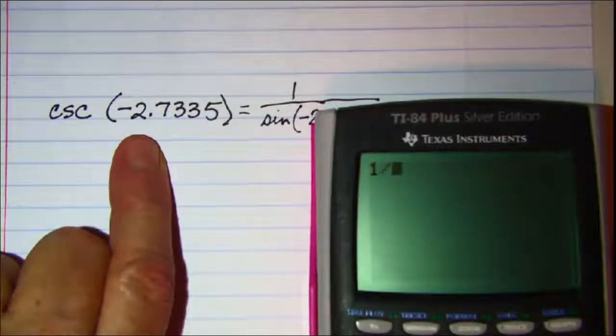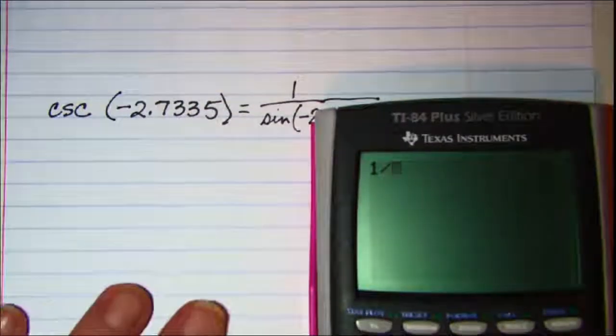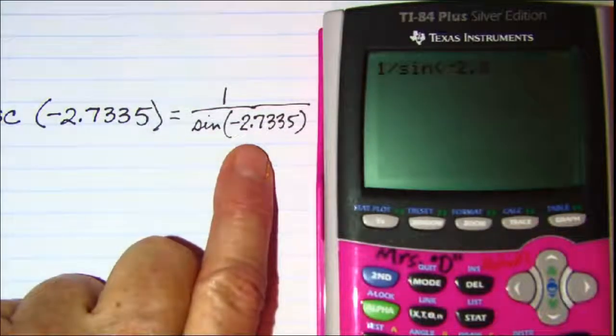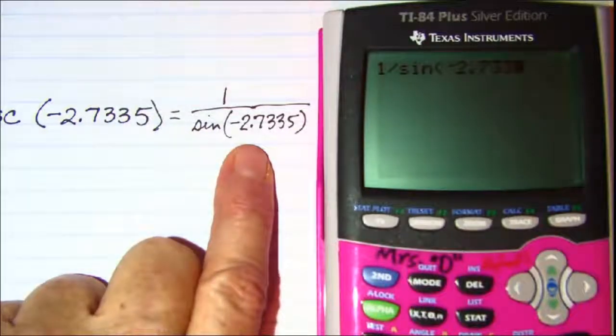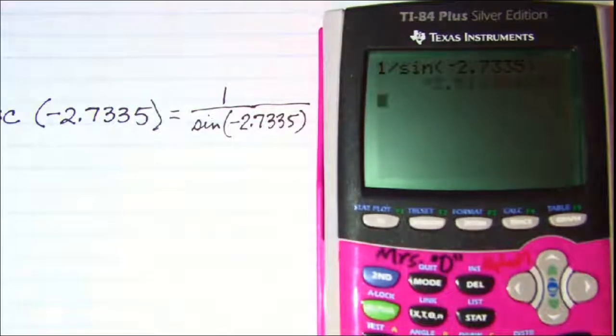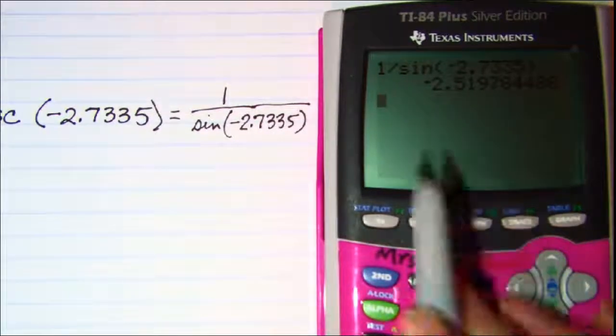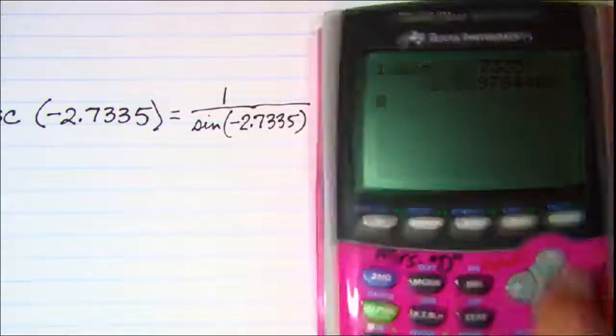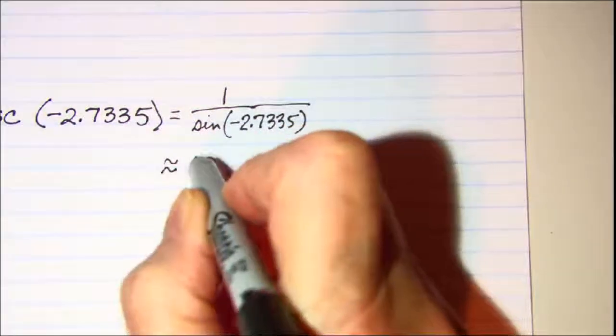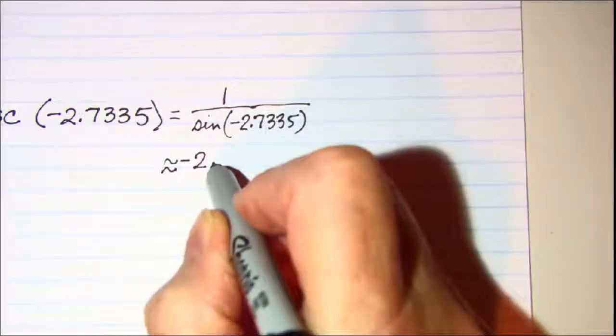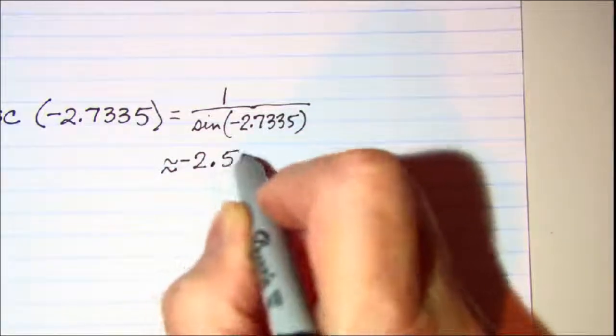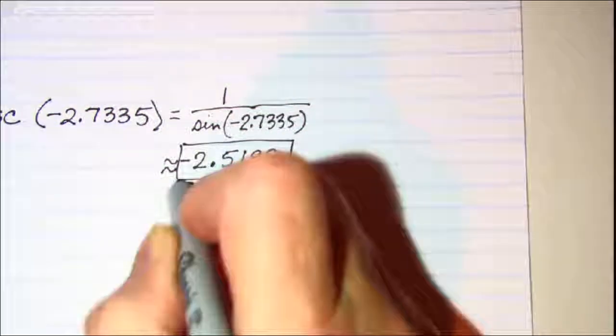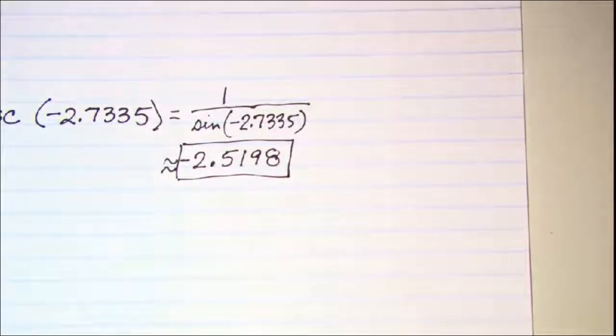So 1 divided by the sine gives us negative 2.5198.